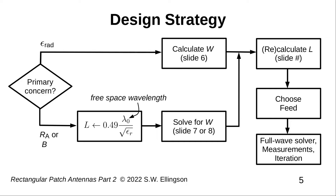Sometimes the primary concern is not radiation efficiency, but rather impedance or bandwidth. In that case, we follow the bottom path through the flowchart. Impedance and bandwidth both depend on L as well as W, so the first step is to find an initial value for L. Our initial guess will be a little bit less than one-half wavelength in a homogeneous dielectric space with the same relative permittivity as the PCB substrate. We use 0.49 as opposed to one-half as a crude way to account for the effect of fringing fields, which generally reduce L. Once we have L and W, the procedure is the same: refine L, choose a feed, and then iterate.